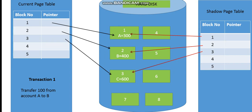The current page table is the copy of your shadow page table. Transaction 1 wants to transfer 100 from account A to account B. In the hard disk, account A is in block 1, account B is in block 2, and account C is in block 3. The remaining blocks are free. Initially, both the current page table and the shadow page table pointers are pointing to the same blocks.